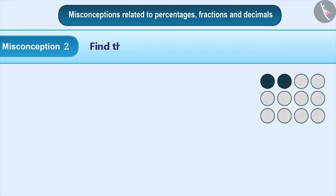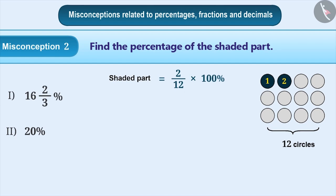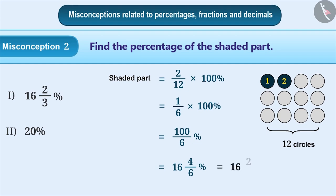Misconception 2: In the given picture, find the percentage of the shaded part. Here, there are a total of 12 circles, in which 2 circles are shaded. Therefore, we can say that the shaded part is 2 by 12. To express this fraction in percentage, we multiply 2 by 12 with 100%. 2 by 12 into 100% equals 1 by 6 into 100%, which equals 100 by 6%, which equals 16 and 2 by 3%. Therefore, the correct answer is option 1.